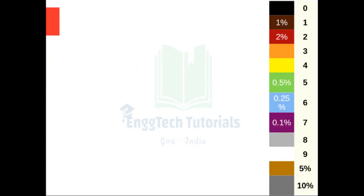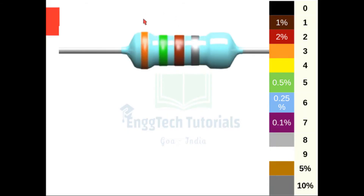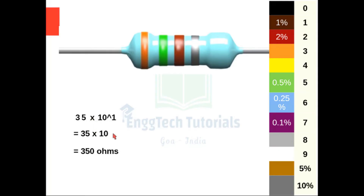Next we will see how to solve a 4 band resistor. The first color is orange, and orange corresponds to digit 3, so we write 3. The next color is green, and green corresponds to digit 5, so we write 5. The third color is the multiplier, which is brown, and brown corresponds to digit 1, so we write into 10 raised to 1 — that is 35 into 10, which is 350 ohms. The last color is silver, and silver corresponds to a tolerance level of 10%, so we write it as plus or minus 10%.